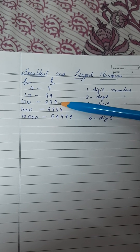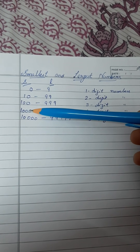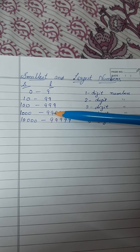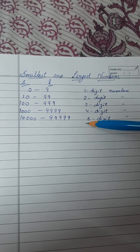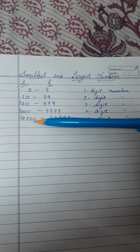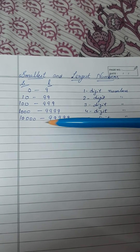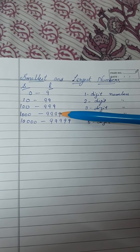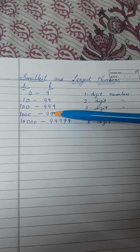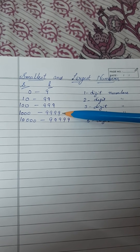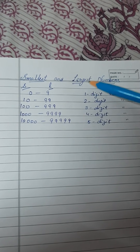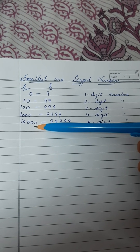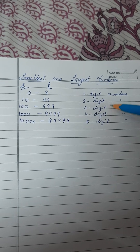In 4 digit numbers, the smallest number is 1000 and the largest number is 9999. Similarly, for 5 digit numbers, 10,000 is the smallest number and 99,999 is the largest. When we add 1 to 9999, it becomes a 5 digit number — so you need to keep track of the number of digits.